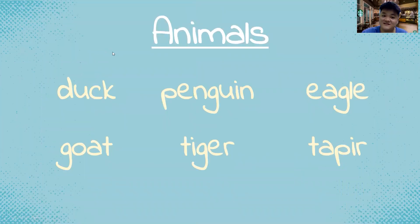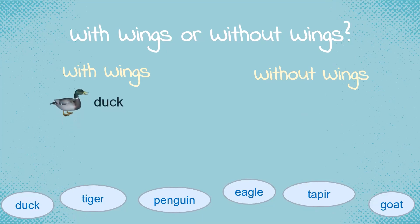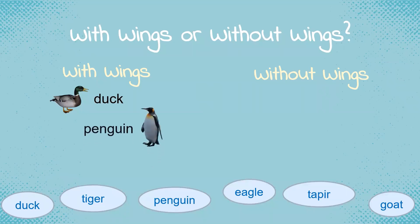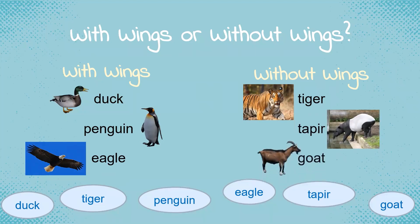Let's classify these animals now — with wings or without wings. What goes into the with-wings category? Number one: duck. Number two: penguin. Number three: eagle. What goes under the classification of without wings? Number one: tiger. Number two: tapir. And number three: goat. So animals can be classified as with wings and without wings.